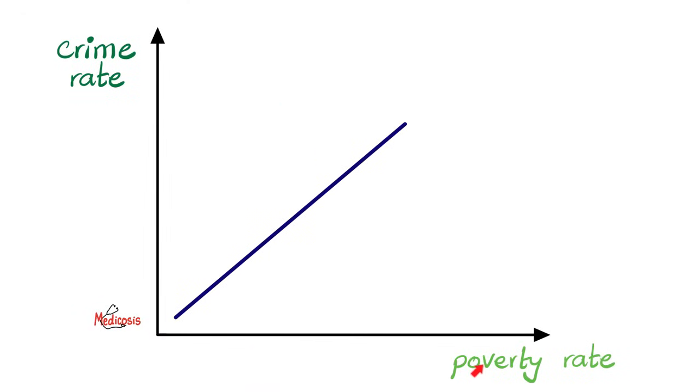So you put the independent variable, the poverty rate, on the horizontal axis and the dependent variable on the y-axis, which is the crime rate. And then you do some research to find whether or not there is a correlation. If the correlation is perfect like this, this is a positive one correlation. If the correlation looks like this, that will be a negative one correlation. A positive one correlation means that all of the data points will be exactly right smack on that straight line. That's a perfect positive one correlation.